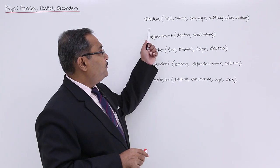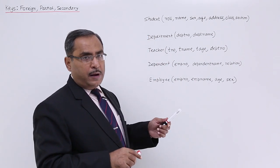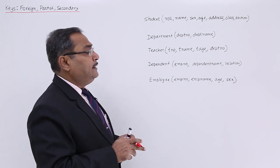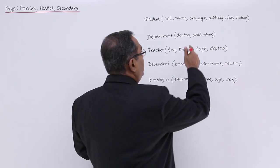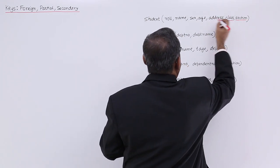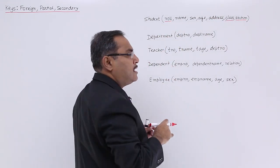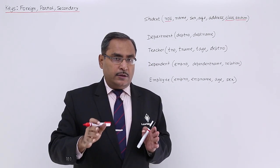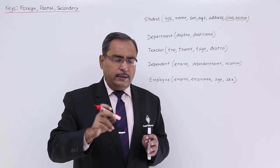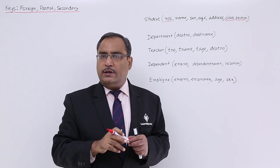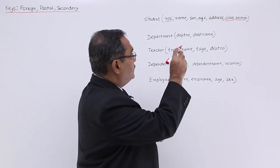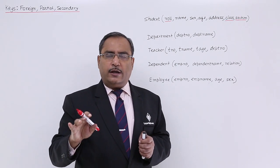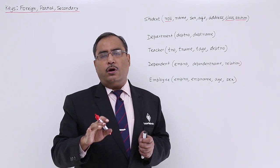We also discussed that in the case of a student, we have one primary key: class, section, and roll number. In the schema, we mark this by underlining class, section, and roll number to indicate that they form the primary key. Those attributes taking part in the primary key are known as prime attributes or key attributes.